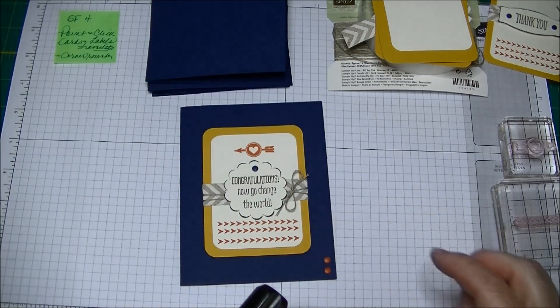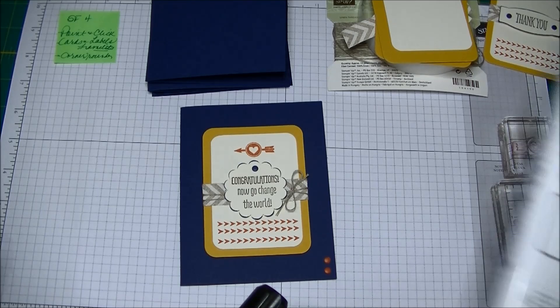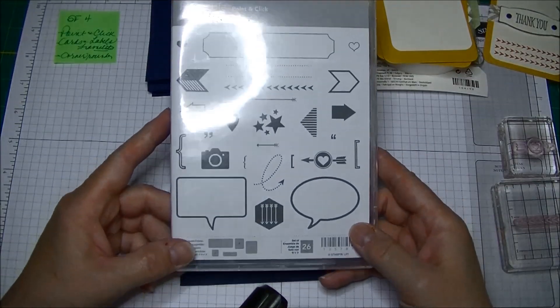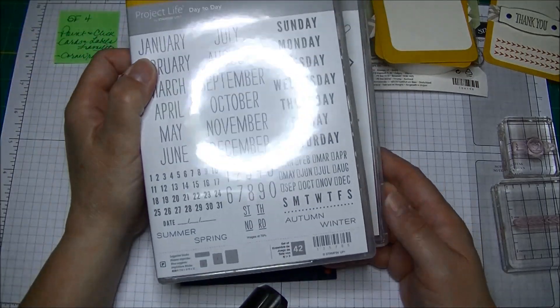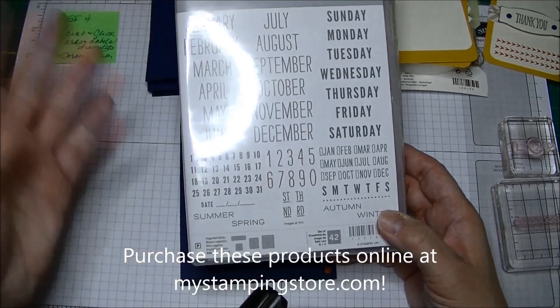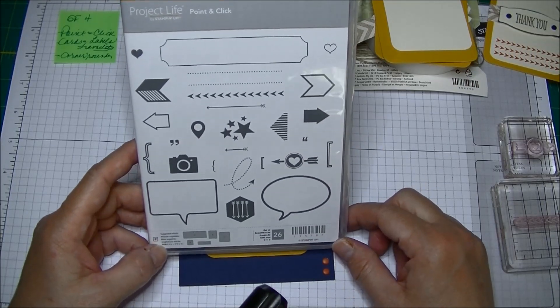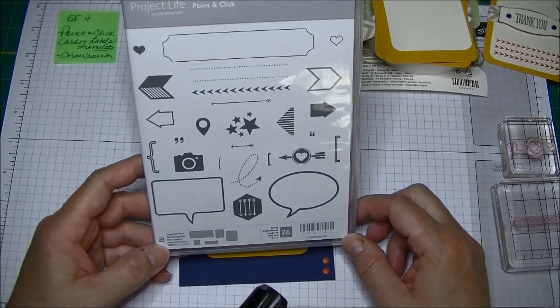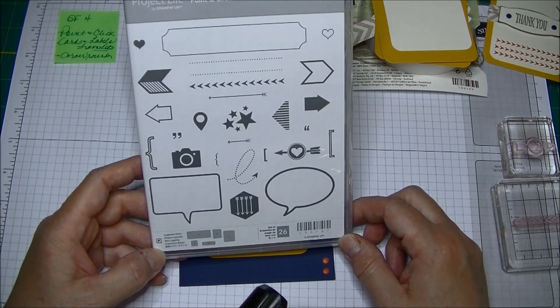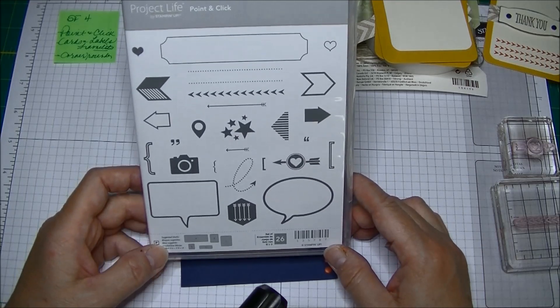So I wanted to play with those. They've released two stamp sets so far. One is the day-to-day Project Life with the months, the days, it's all for dates. And the other one they've released is the Point and Click, the Project Life Point and Click. This is the Stampin' Up Project Life line of products and I love this.